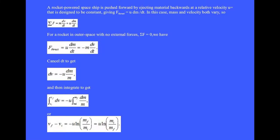A rocket powered spaceship is pushed forward by ejecting material backward at a relative velocity u that is designed to be constant, giving the thrust force equals u dm dt. In this case, mass and velocity both vary so the sum of the external forces equals m dv dt plus u dm dt.